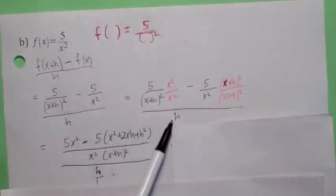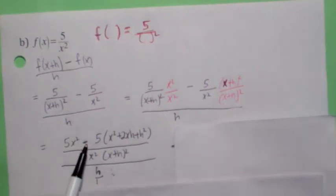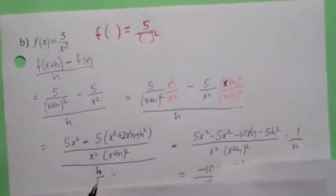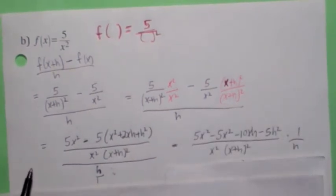Now, the bottom is h, which is h over 1. The next step, we're going to distribute the negative 5 on the top, and we're going to flip this over and multiply by 1 over h. So we get this. You see how easy it is to make a careless error here.